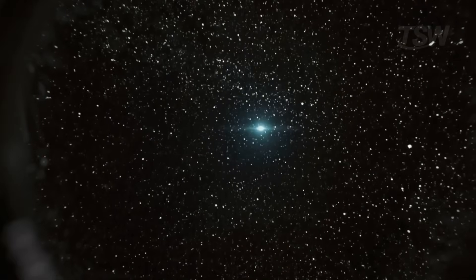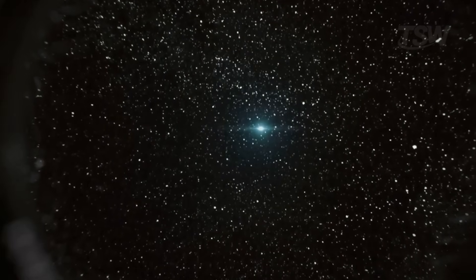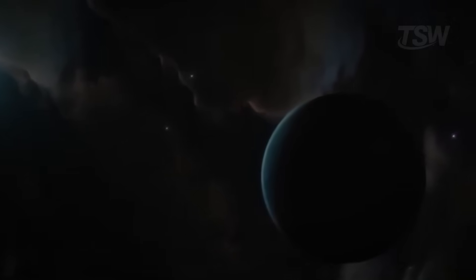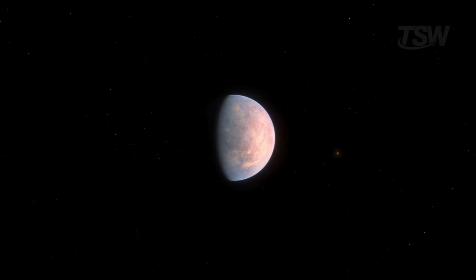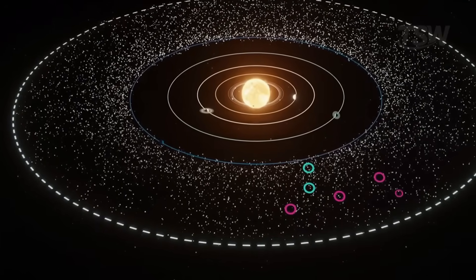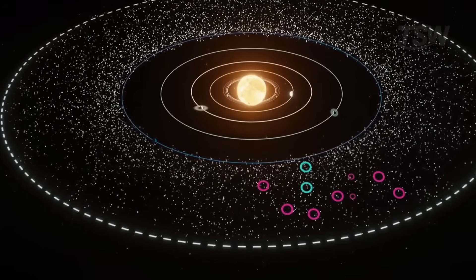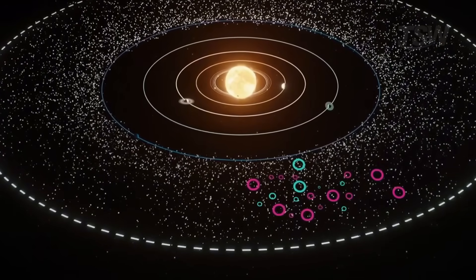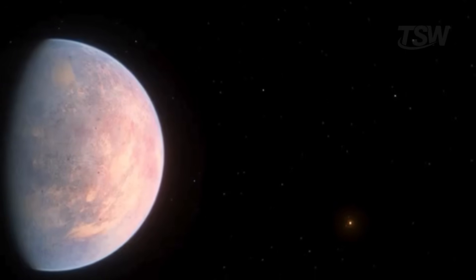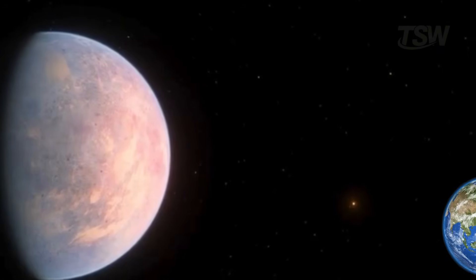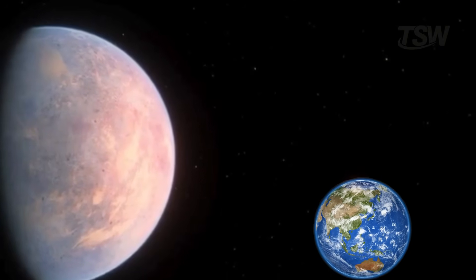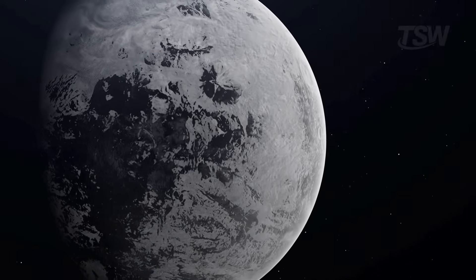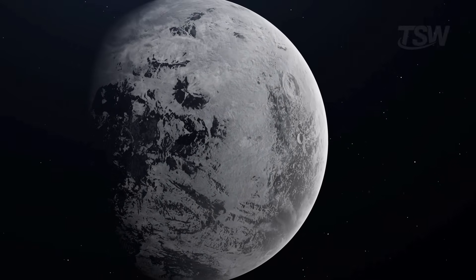That last question has fueled one of the most exciting hypotheses in modern astronomy: the existence of a ninth planet. Yes, a real Planet Nine. Not Pluto, not Eris, but something even bigger. Astronomers began noticing that the orbits of some of these distant objects, like Sedna and others, seemed strangely aligned, as if something massive and unseen were pulling their paths in a specific direction. This gravitational influence led to the idea that a large planet, possibly up to 10 times the mass of Earth, could be orbiting far beyond what we can currently observe.